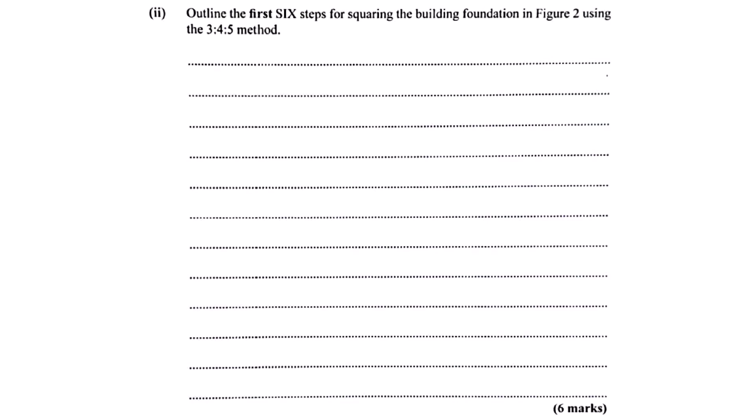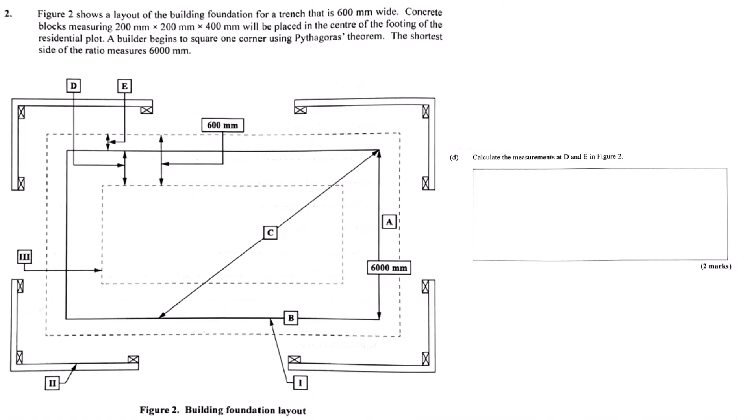Now, back on that layout diagram, it mentions measurements D and E. If those are the trench width, and the source somewhere else says 600 millimeters for the trench, then D and E would both be 600 millimeters, just keeping it consistent. That sounds right. Maintaining that consistent width is really important. Why exactly? It relates directly to how the foundation spreads the building's load. Generally, a wider base spreads the weight better. If the width varies... You get weak spots. Yes. It could compromise the whole foundation's strength.